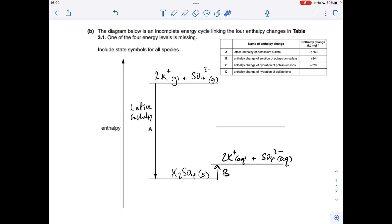To complete the cycle, we just need to hydrate the gaseous ions one at a time. I always hydrate the metal ion first and then hydrate the non-metal ion next. So that makes that step C, so I need 2K+(aq) there, the sulfate ion still gaseous, and that's step D, the hydration of the sulfate ion.